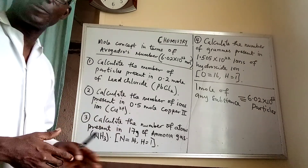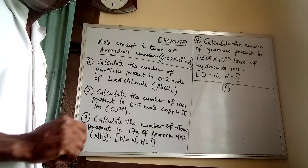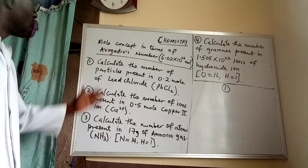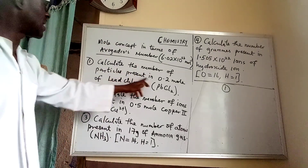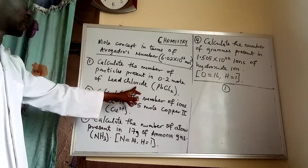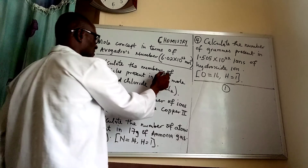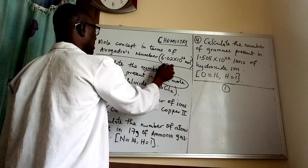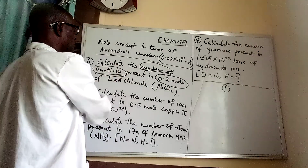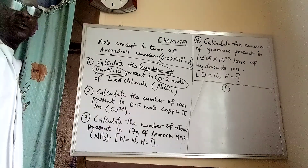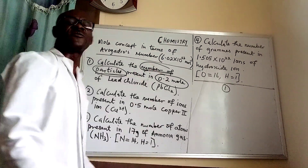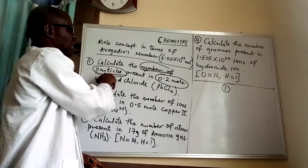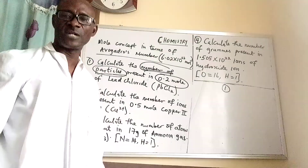On to question one. We want to calculate the number of particles present in 0.2 mole of lead chloride. Since we are given moles and we are finding the number of particles, the number of particles will be found using Avogadro's constant. We don't have anything to do with the relative molecular mass in this case.